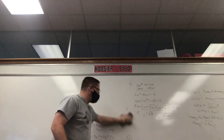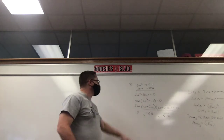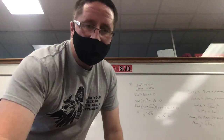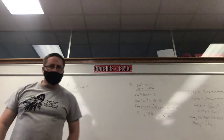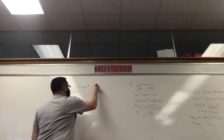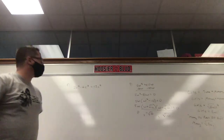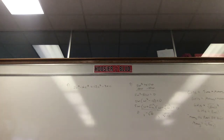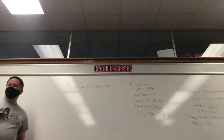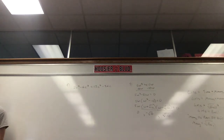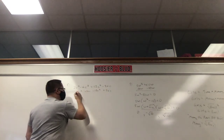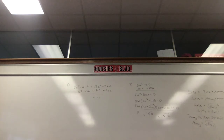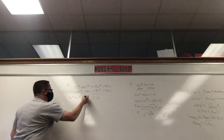Let's look at number 9. We have 2c⁴ − 6c³ = 12c² − 36c. First thing: get it to equal zero. I'm going to add 12c² and 36c to each side. There are no like terms, so in order: 2c⁴ − 6c³ − 12c² + 36c = 0.